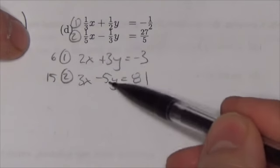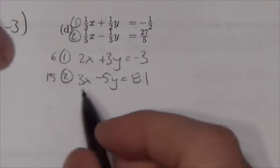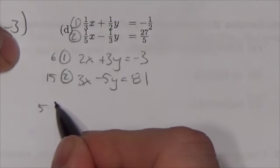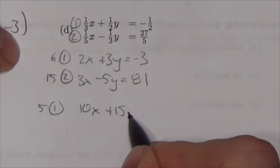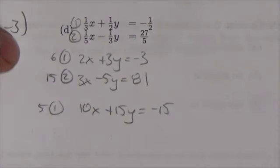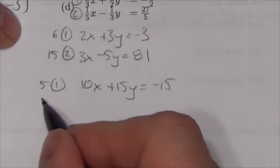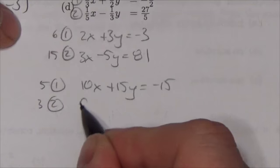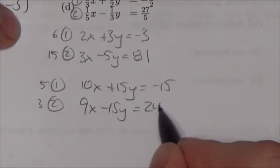The smallest common multiple of 3 and 5 is 15. So I'm going to multiply that first equation by 5, which gives me 10x plus 15y equals negative 15. And I'll multiply the second equation by 3, giving me 9x minus 15y equals 243.